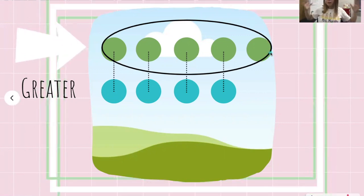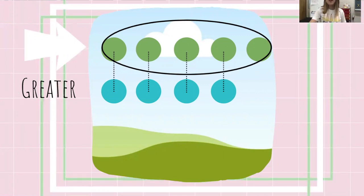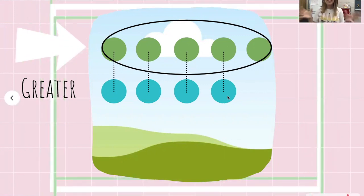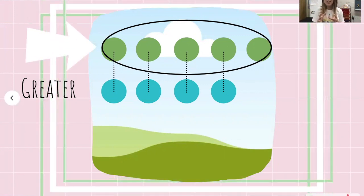So if the green group is greater, that means the blue group is less because there's not as many.